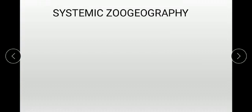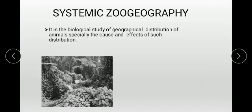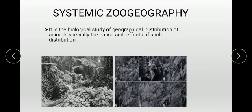Next is systemic zoo geography. It is the biogeographic distribution of animals, especially the causes and effects of such distribution. An animal living in one environment may migrate to another, driven by certain causes. The environment has effects on the animal, and the animal also has effects on the environment — both affect each other. All of this is studied in systemic zoo geography.